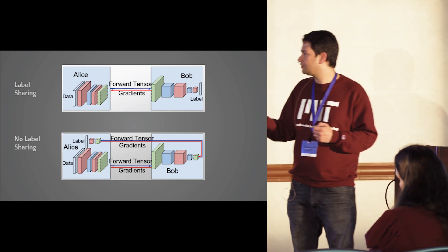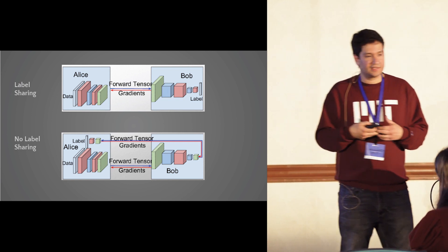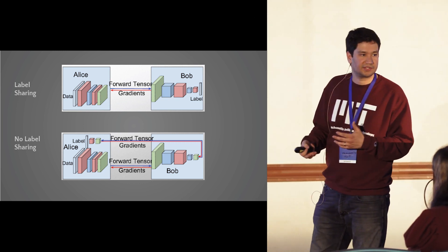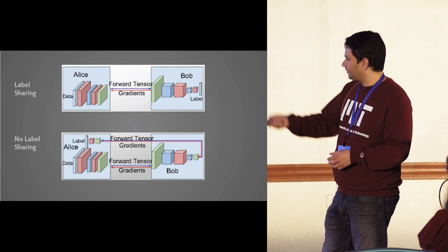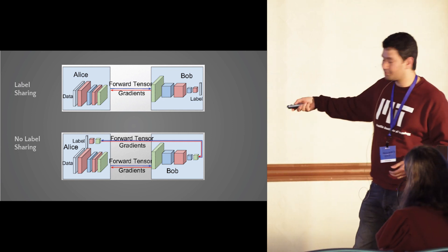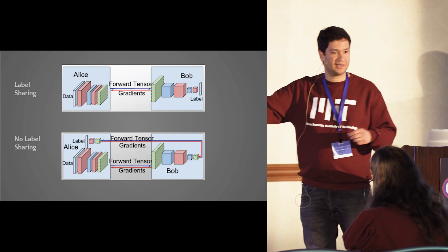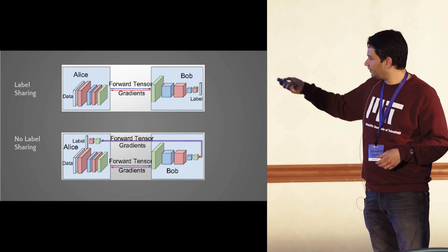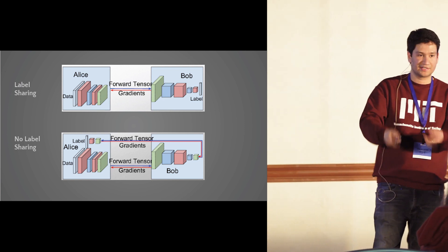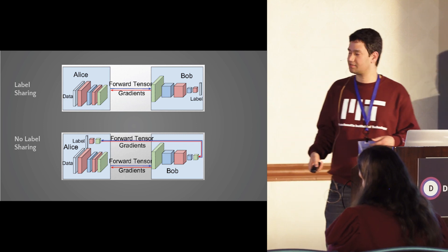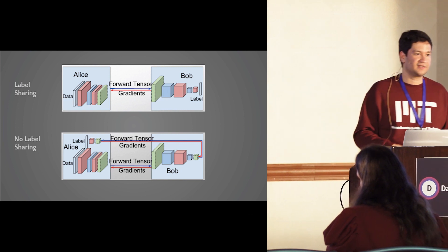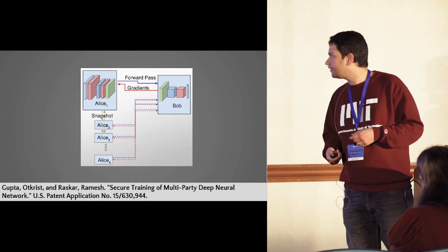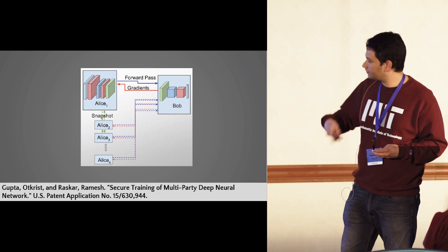One popular modification is the no-label-sharing version. If Alice has features and also has labels — say, diagnostic information about a disease — she forward-propagates for a while, sends her split-layer activations to Bob, who forward-propagates as the middle entity doing number-crunching without knowing Alice's labels or raw data. The forward propagation then returns to Alice, who forward-propagates more until she reaches her labels. The labels never leave Alice. Then the same happens with gradients in the reverse direction and weights are updated over epochs.